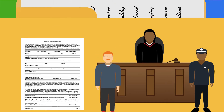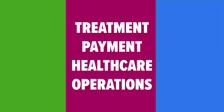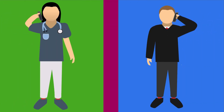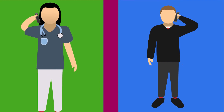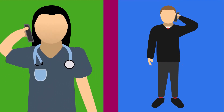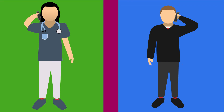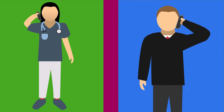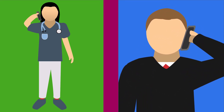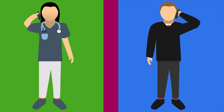HIPAA does not require approval to release PHI for the purposes of treatment, payment, or health care operations. HIPAA also permits a covered health care provider to disclose PHI for the treatment of an individual to a third party, such as a social service agency, that is involved in the coordination or management of health care of that individual.